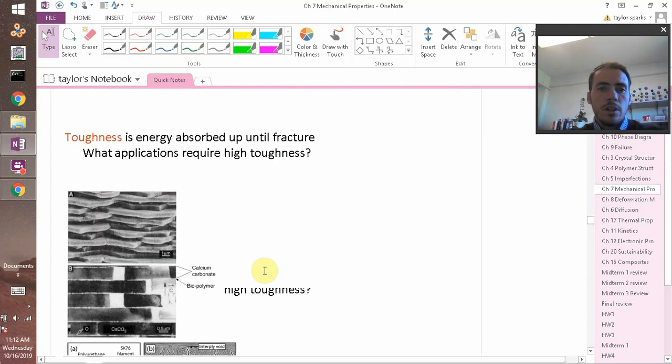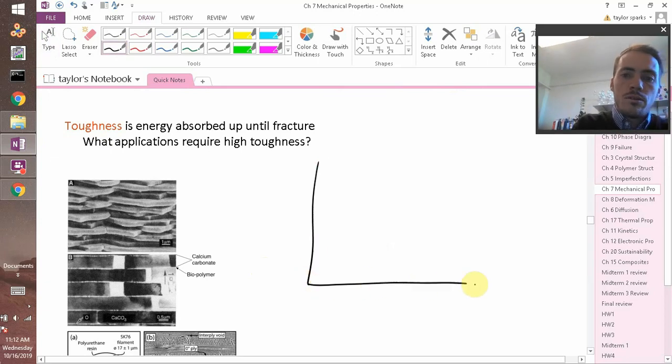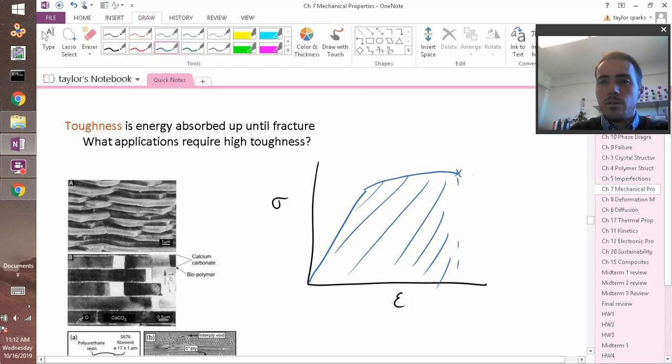So last time we left off talking about toughness and we said that it's the area under the curve. So if you have your stress versus strain curve, and you've got a material, it's going to have an elastic region. And after that point, it's going to start to permanently deform. And once it does fracture this area under that whole curve, that is your toughness.